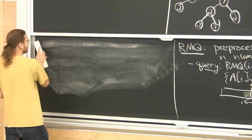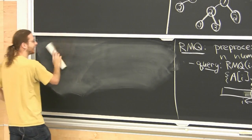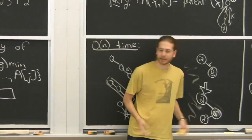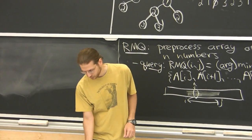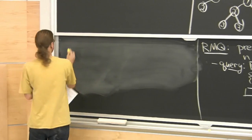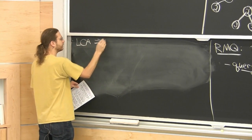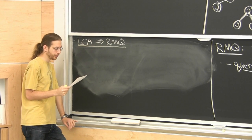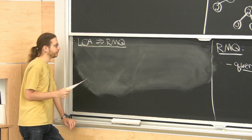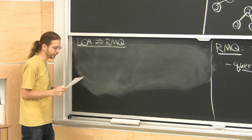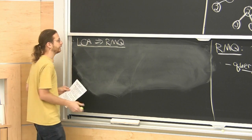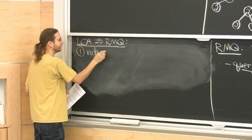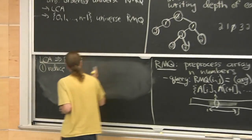LCA — which implies RMQ — was originally solved by Harel and Tarjan in 1984, but it's rather complicated. The version I'm going to discuss is from 2000 by Bender and Farach-Colton, the same authors of the cache-oblivious B-trees. That's a much simpler presentation. The first step is a reduction from LCA to RMQ that gives us a more restrictive problem called plus-or-minus-1 RMQ.